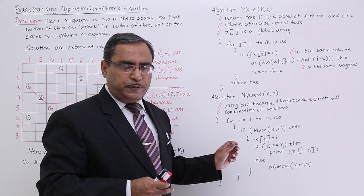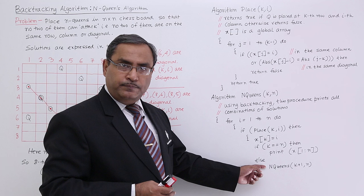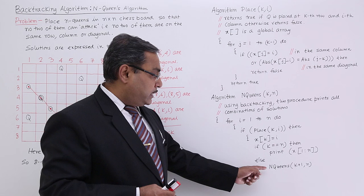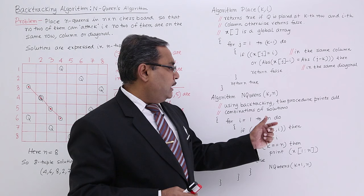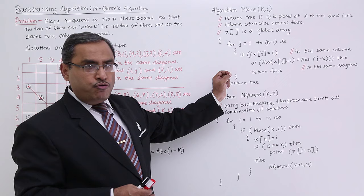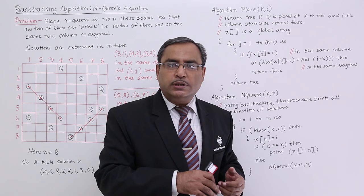Recursion within iteration — this is the flavor of backtracking algorithm. Now let me go for this Place function. Place is a function which will return true if the kth queen can be placed at the i-th column, and it will return false otherwise.